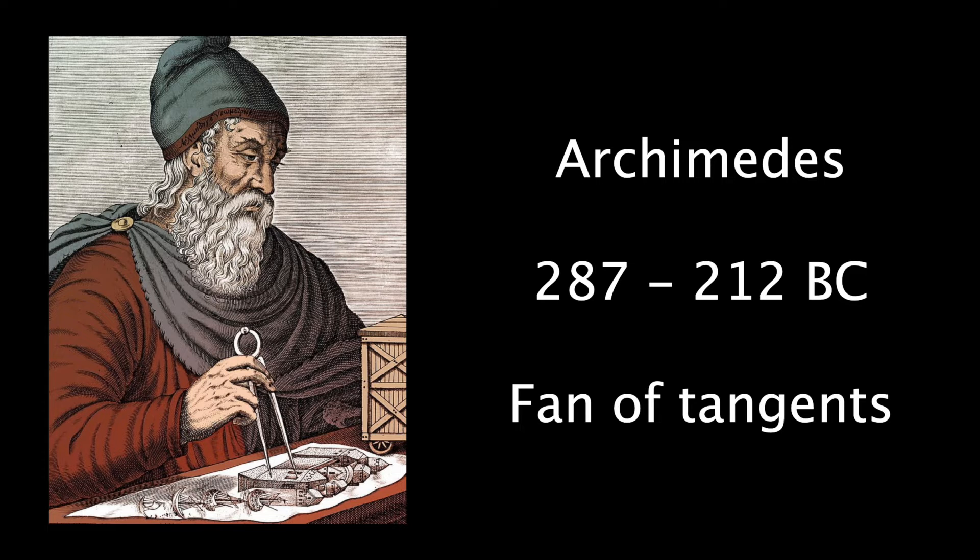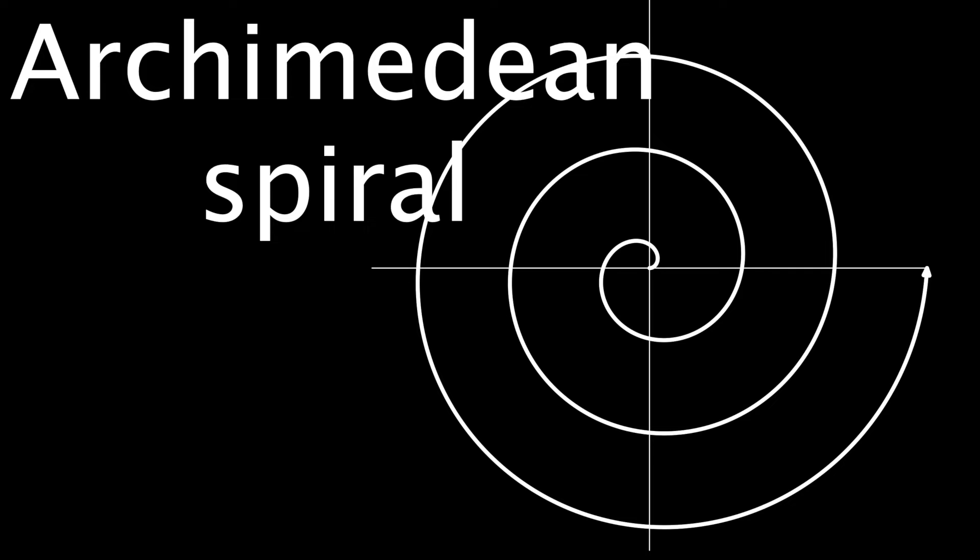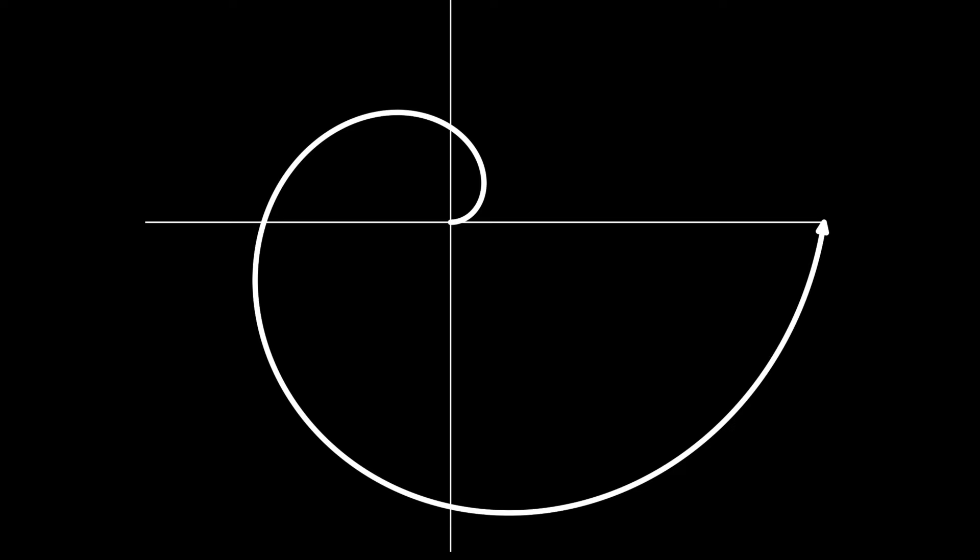So this is an old question. Philosophers in ancient Greece thought about tangents. Archimedes is an example. He was alive from 287 before chickens to 212 before chickens and he was a fan of tangents. He found tangents to what we now call the Archimedean spiral.